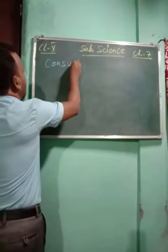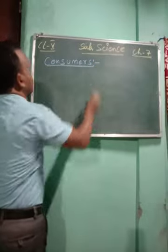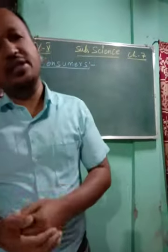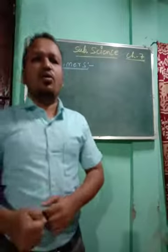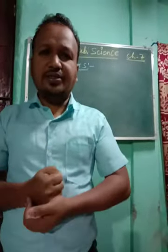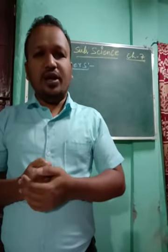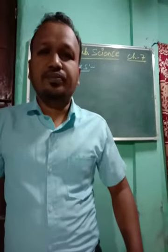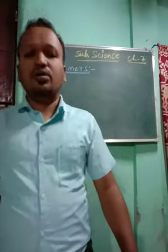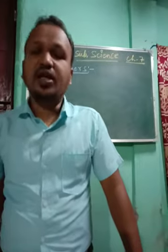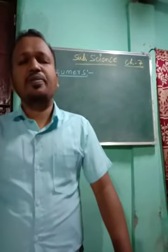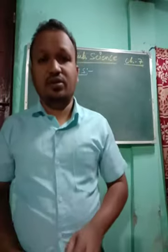Today we are going to talk about consumers. Who are considered to be the consumer? Last time we discussed that plants are the producers — they produce their own food with the help of sunlight, water, and carbon dioxide. Consumers cannot produce anything of their own, so they need to depend on others. Any living organism that cannot prepare their own food has to depend on plants or other animals for their survival and food.